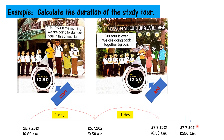Since we're on the same date, the remaining answer is in hours — bukan lagi days. Jawapan di sini adalah kita kena kira dalam hours. From 10.50 to 11.50 is one hour, satu jam. And then from 11.50 to 12.50 — another one hour. So all together is two hours.